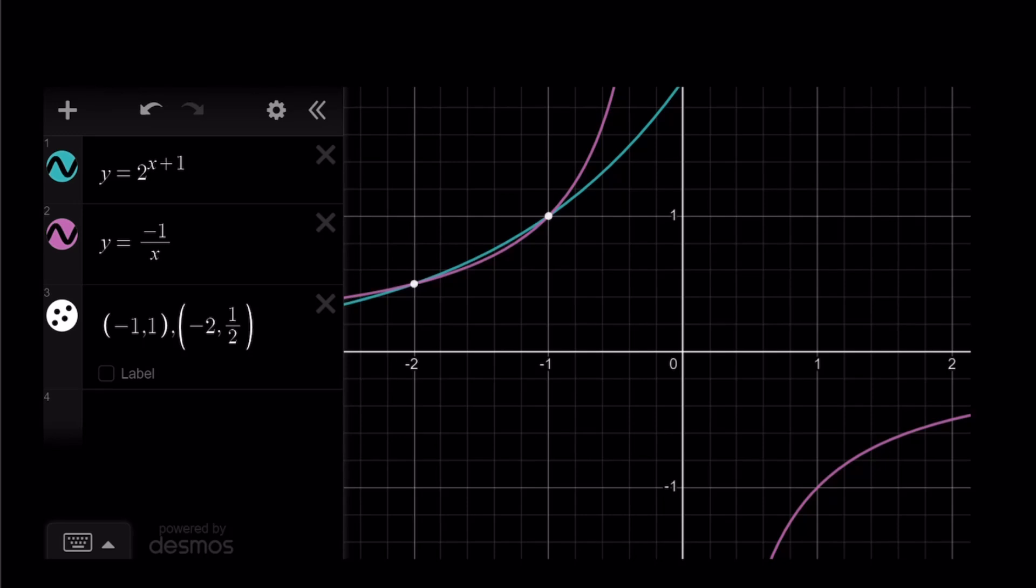2 to the x plus 1 is exponential. Negative 1 over x is a hyperbola. And they intersect at two points: x equals negative 2 and x equals negative 1. And this brings us to the end of this video.